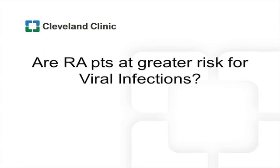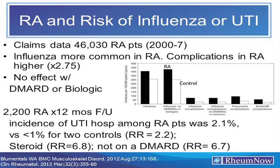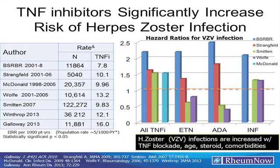Regarding viral infections: influenza and UTI are elevated in RA patients compared to controls, not necessarily driven by the therapies we use. UTI risk is twofold increased in RA patients, probably related to steroid use rather than DMARDs. For herpes zoster, the data supports an increased risk in patients receiving TNF inhibitors, with most large cohort studies showing hazard ratios greater than one, requiring a smart preventive strategy.